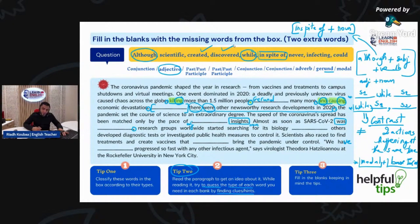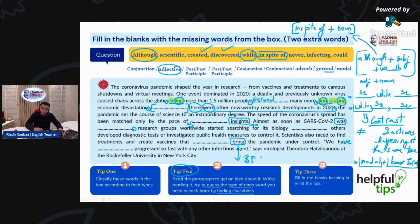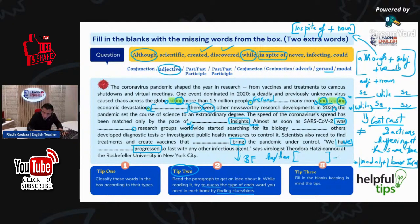Research groups worldwide started searching for its biology. Others developed diagnostic tests or investigated public health measures to control it. Scientists also raced to find treatments and create vaccines that could bring the pandemic under control. We have 'never progressed so fast' — so here we need an adverb between the auxiliary 'have/has' and the past participle. That's the only thing that we need.